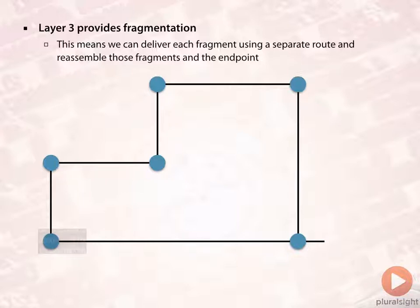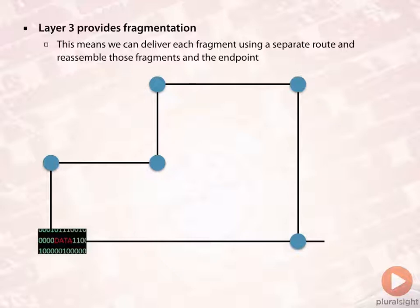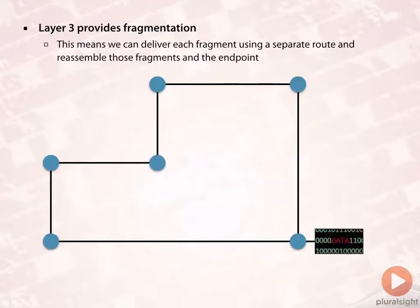Here's an example: we take a chunk of data — a datagram or packet — and we're going to send it from the left-hand side to the right-hand side of our screen. But the MTU is too big, so we have to chop it up and send it. The router can then decide to load balance across equal or unequal cost paths. We chop it up, send the data, and put it back together at the other end. That is the high-level functionality of fragmentation.